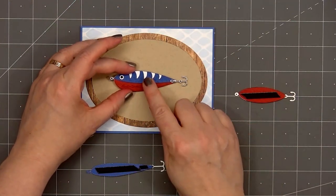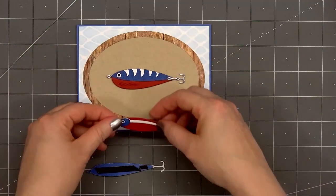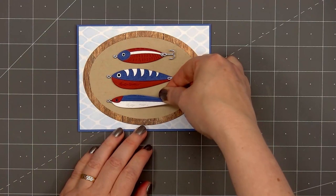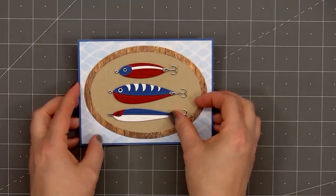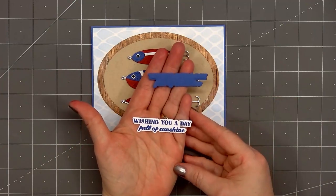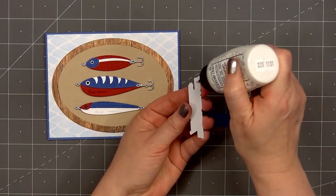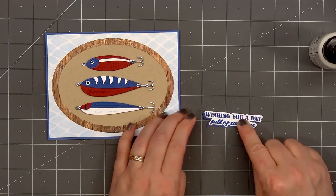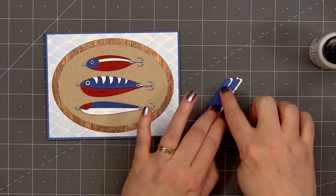I love how the red, white, and blue colors really pop against the craft background. For a sentiment I've already stamped and cut it out, this is wishing you a day full of sunshine. Using the outline die, I cut out a second piece from some blue cardstock. I'll glue those two together, creating a blue drop shadow underneath the sentiment.